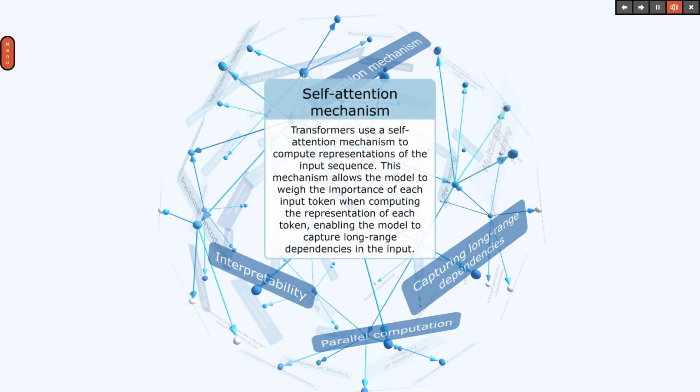Transformers use a self-attention mechanism to compute representations of the input sequence. This mechanism allows the model to weigh the importance of each input token when computing the representation of each token, enabling the model to capture long-range dependencies in the input.